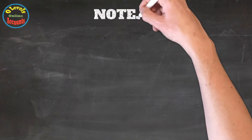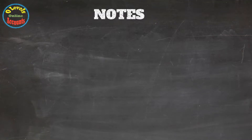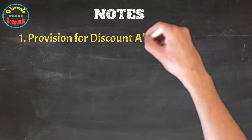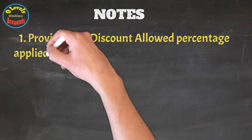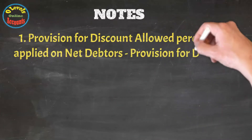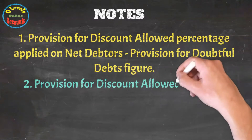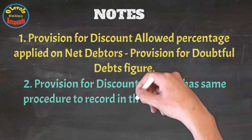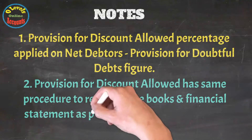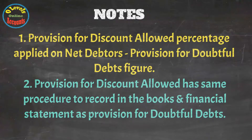Note the important points for provision for discount allowed. Number one: the provision for discount allowed percentage is applied on net debtors minus the percentage of provision for doubtful debts. It means first we will deduct the doubtful debt provision figure and then the discount allowed provision value from the net debtors. Secondly, the provision for discount allowed account has the same procedure to record in the books and financial statements as provision for doubtful debts. The only difference is its value, applied as per point number one.